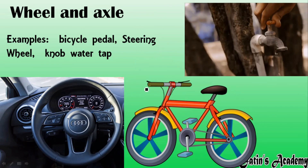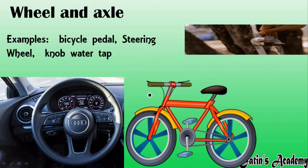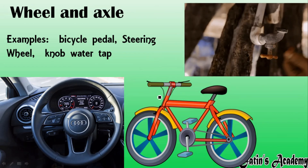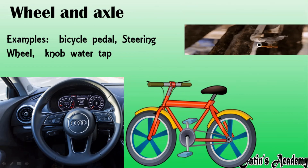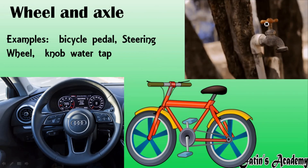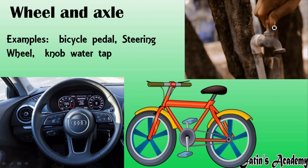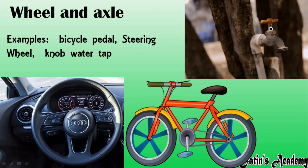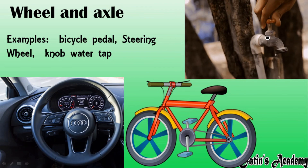The third example is the knob of a water tap. In a knob of a water tap also we are having a wheel and axle arrangement. It is circular in form and here we are having the axle, which can easily rotate the tap.